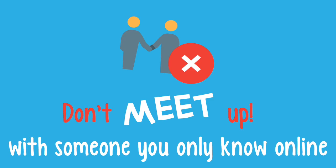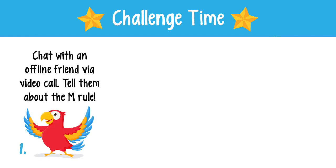So there we go — that's the M rule. M is for meet. Don't meet up with someone you only know online. Speak to an adult you know and trust about what's happened instead, and use the CEOP reporting button if you need to. Now you know the M rule, we have three special challenges you might like to try. Number one: let's celebrate how great the internet is for helping us stay in touch. We challenge you to chat with an offline friend — someone from school or a member of family — via video call. Even better, tell them about the M rule. Just make sure you check with whoever's in charge at home first.